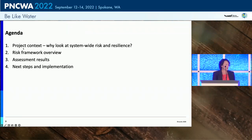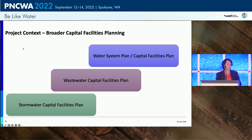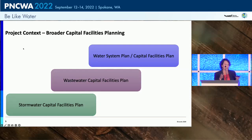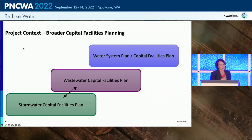The project context: the Growth Management Act for Washington State requires the city to update their capital facilities plans every seven years. This is the first time the city is taking a deeper dive into this analysis in a project called Link Spokane Utility. We're in the middle of honing the strategies for water planning, and we're about to use that same framework for wastewater and stormwater capital. As we went through the analysis, we realized we could look at water separately, but we couldn't separate wastewater and stormwater.